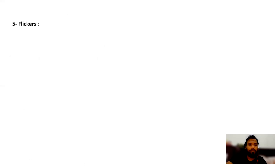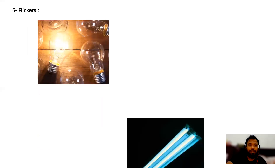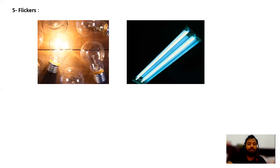The fifth effect is flicker. Due to the sudden change of voltage and current waveforms, flickering occurs in incandescent lamps and fluorescent lamps.